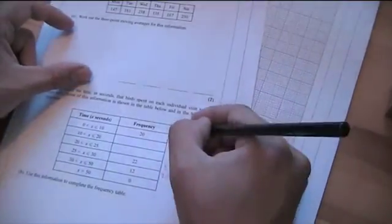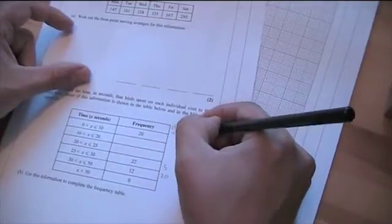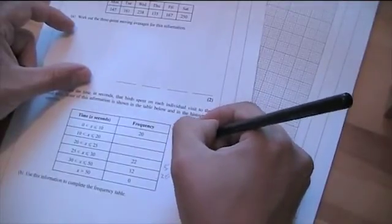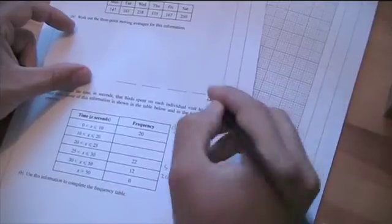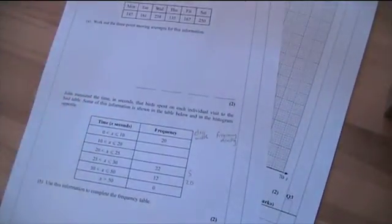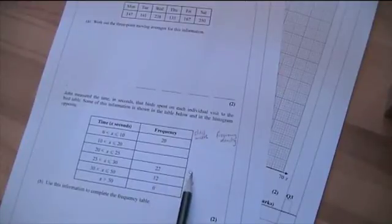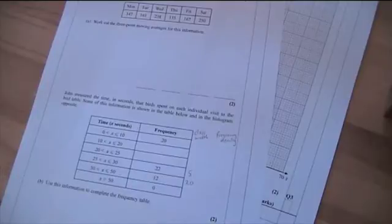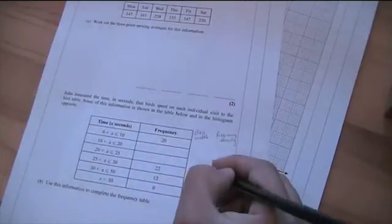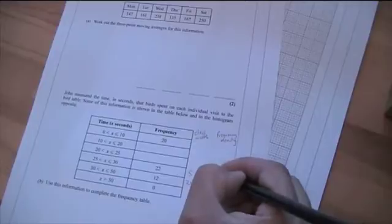Next, we need to work out the frequency density. To work out the frequency density, we take the frequency and we divide it by the class width. So, I'm going to do 22 divided by 5, and that gives me an answer of 4.4.